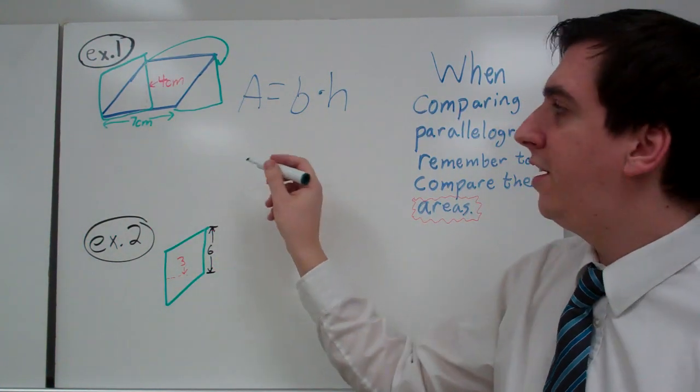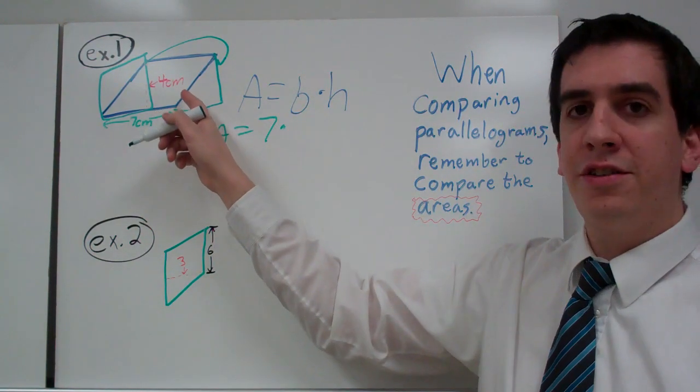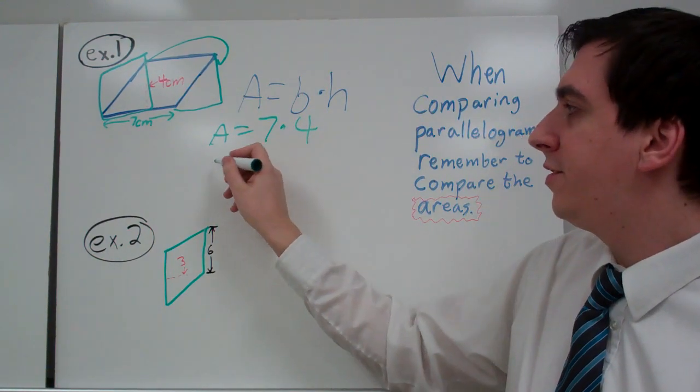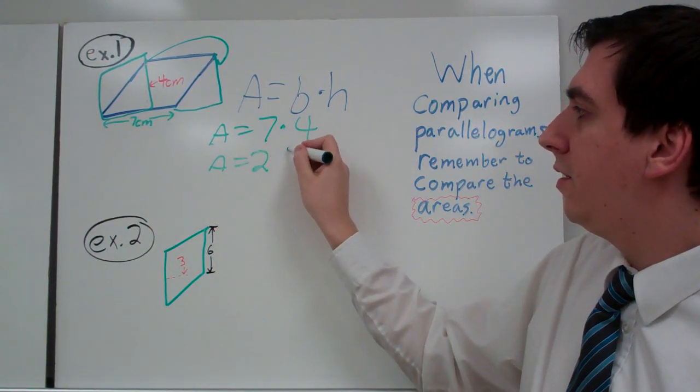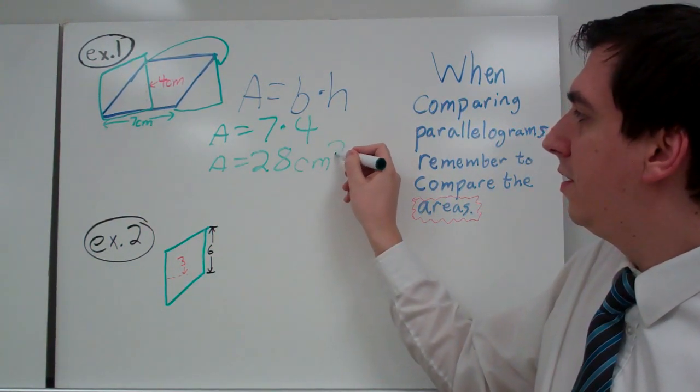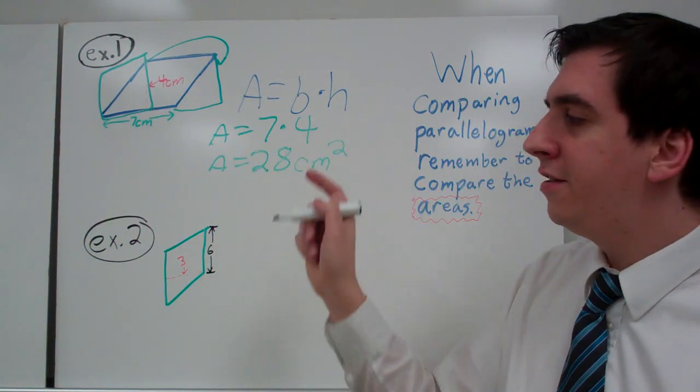Times the height. Our height here is 4 centimeters. 7 times 4 is 28. Remember to put your units on. This is centimeters squared because we multiplied centimeters by centimeters.